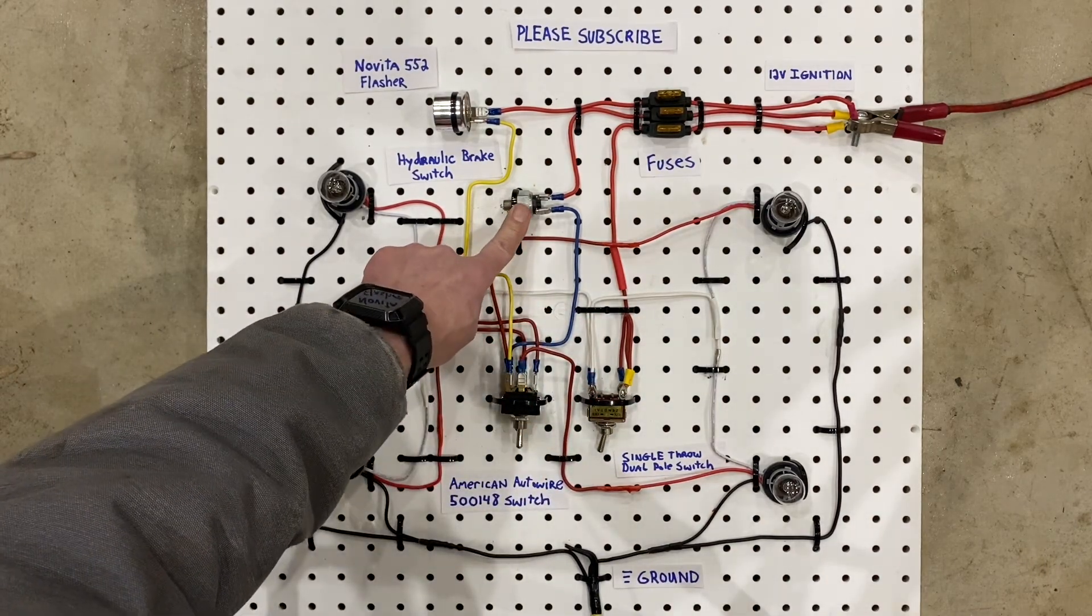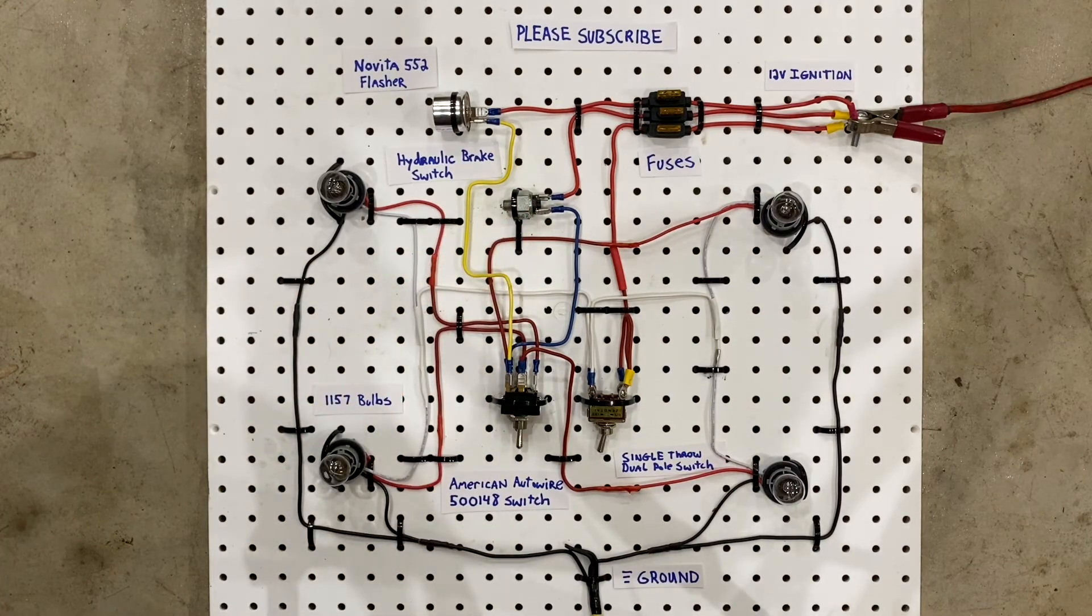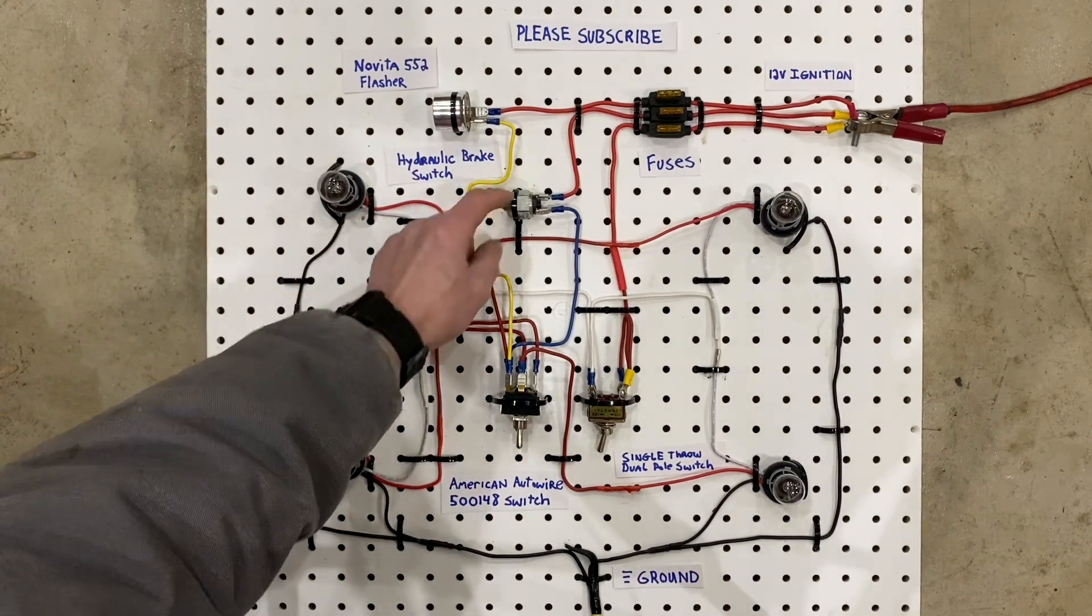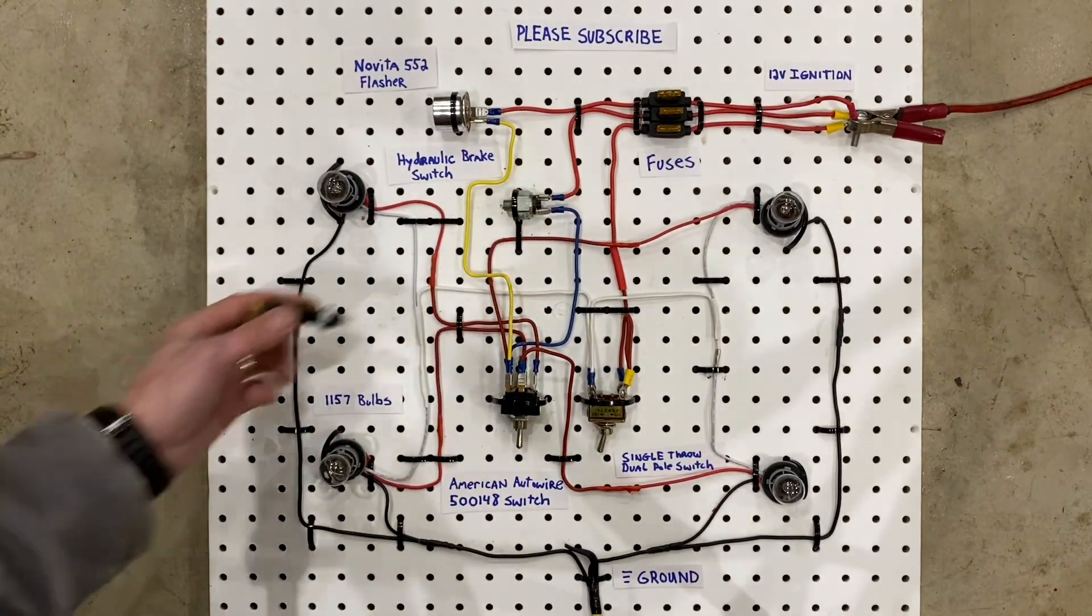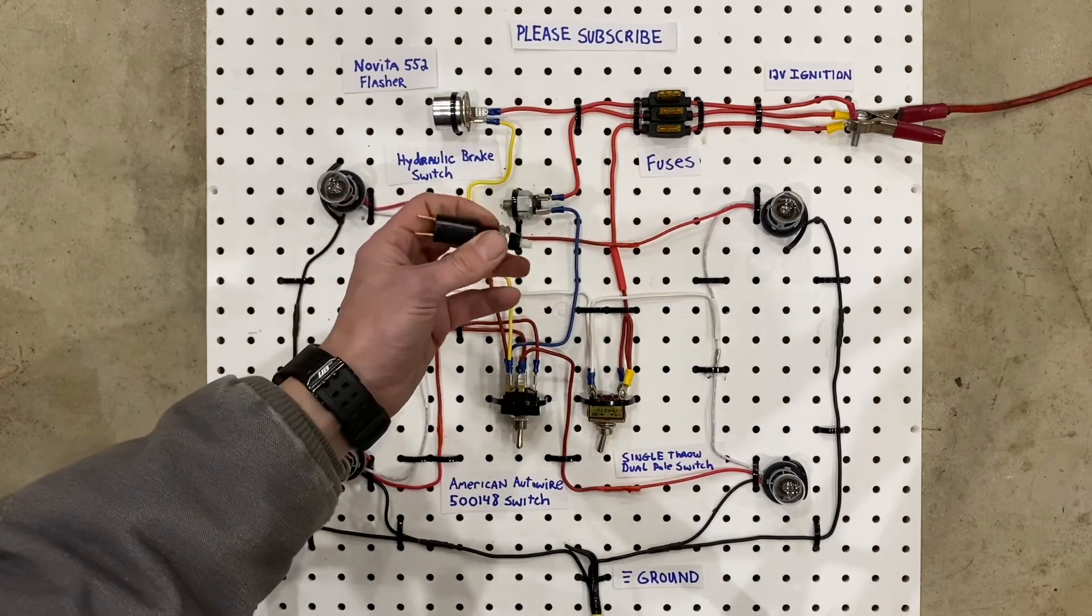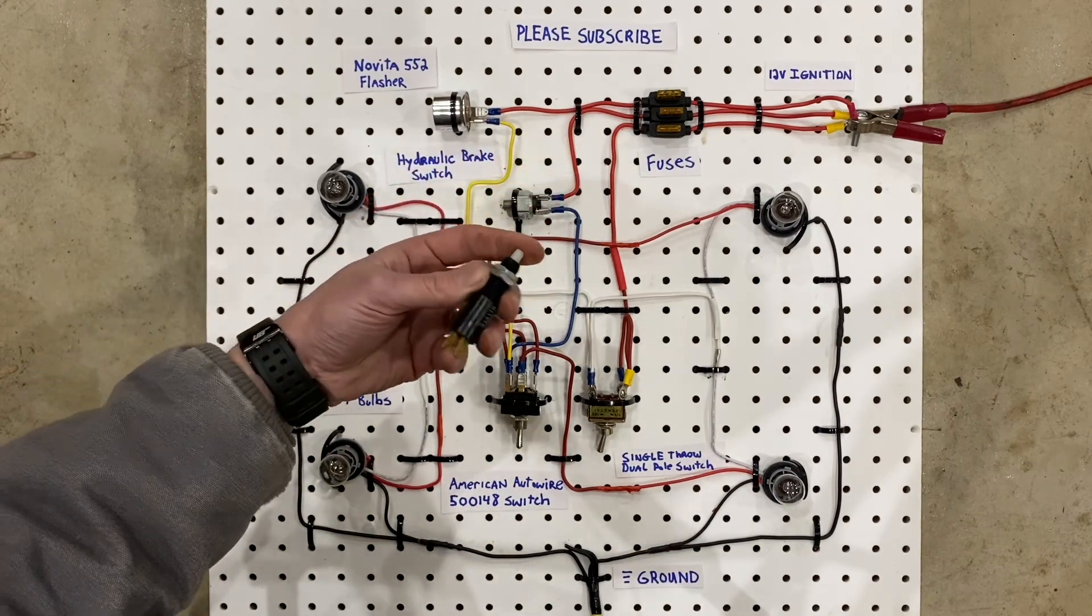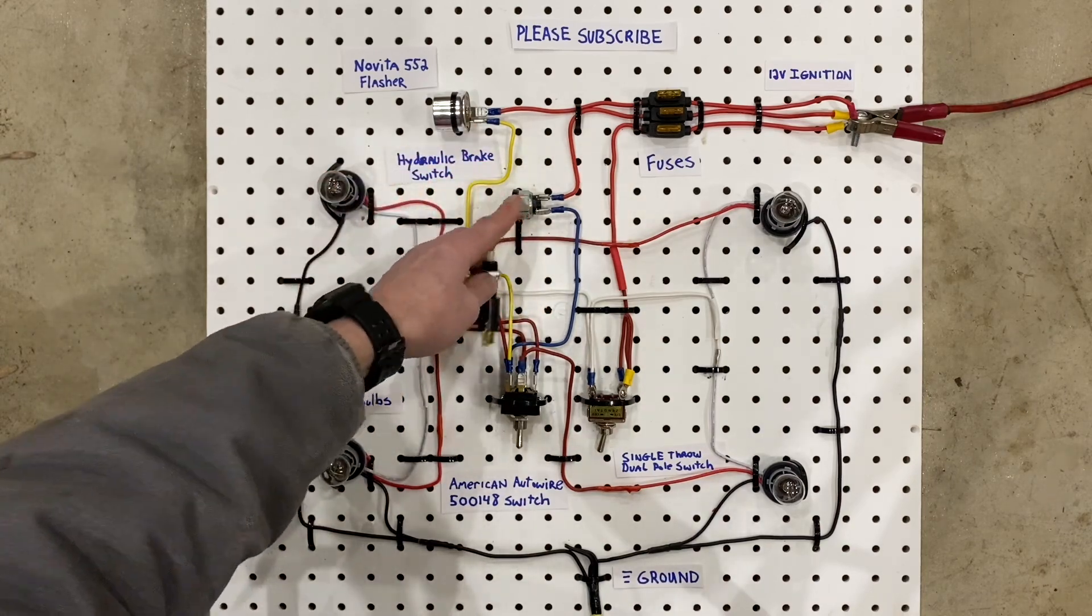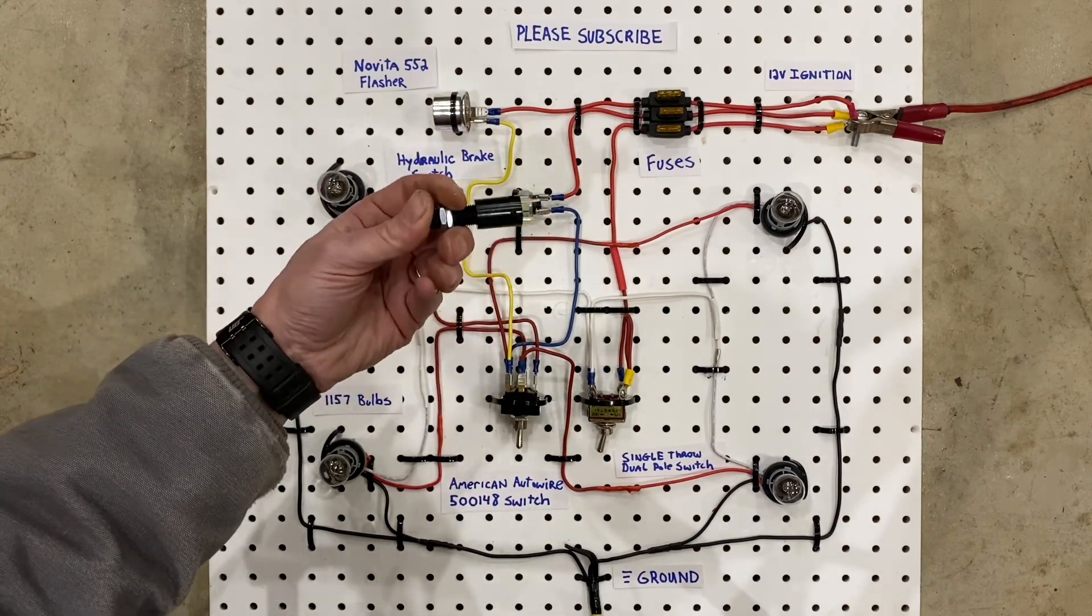Right here we have a hydraulic brake switch. A hydraulic brake switch usually goes anywhere in the hydraulic brake system, and when you push down the pedal, it squishes fluid into the hydraulic brake switch, and it makes the connection between the terminals. You could actually replace that with a plunger type switch. This kind goes on the brake pedal under the dashboard, and when you push the brake down, this plunger comes out, and then when your brake pedal comes back up, it pushes the plunger in.